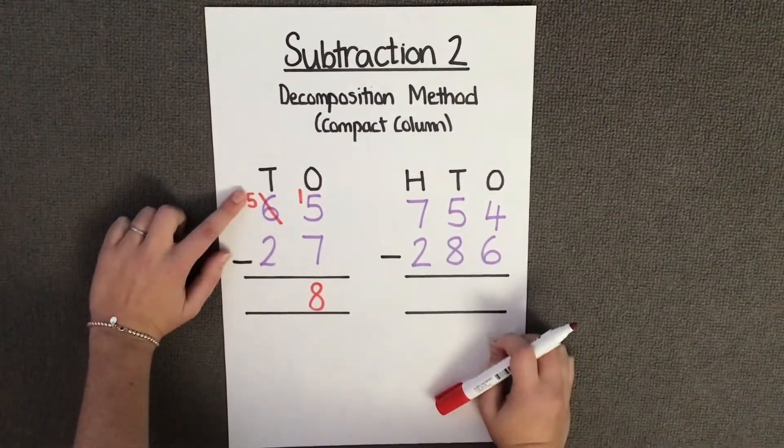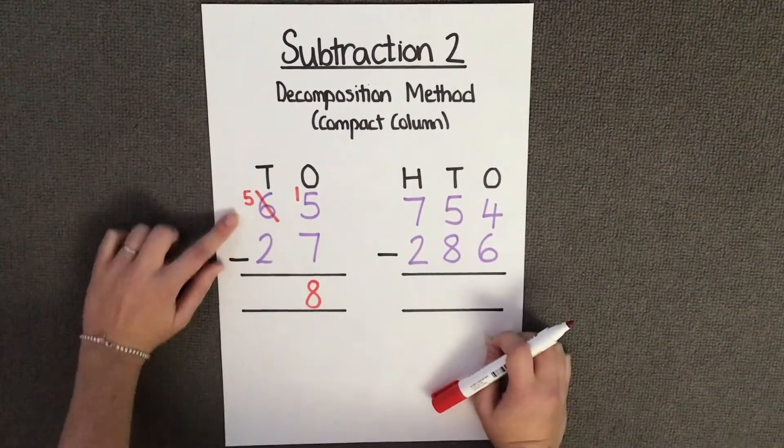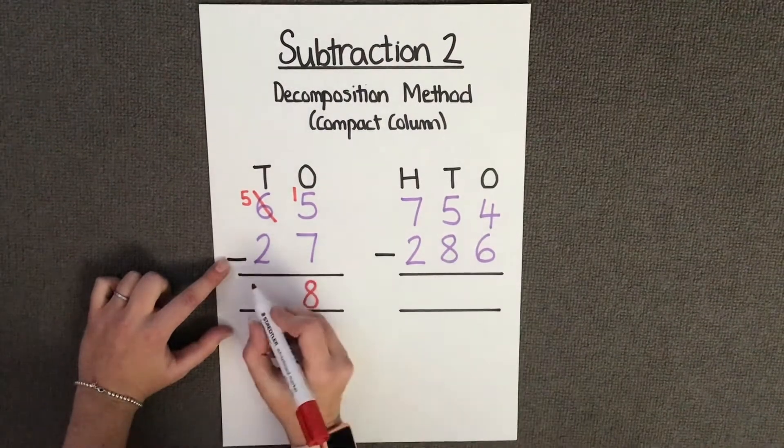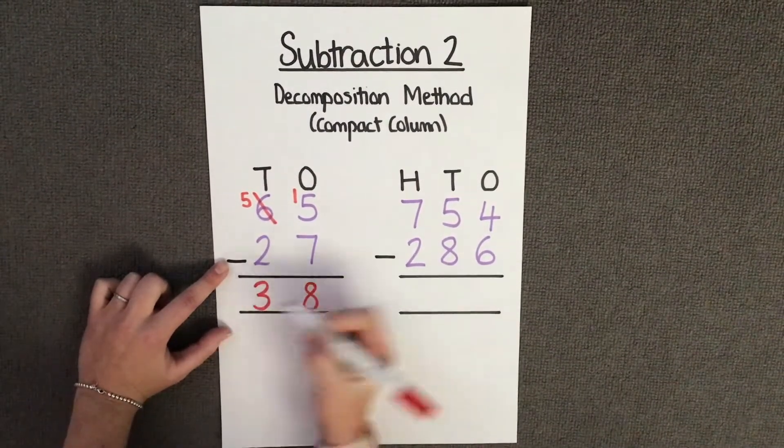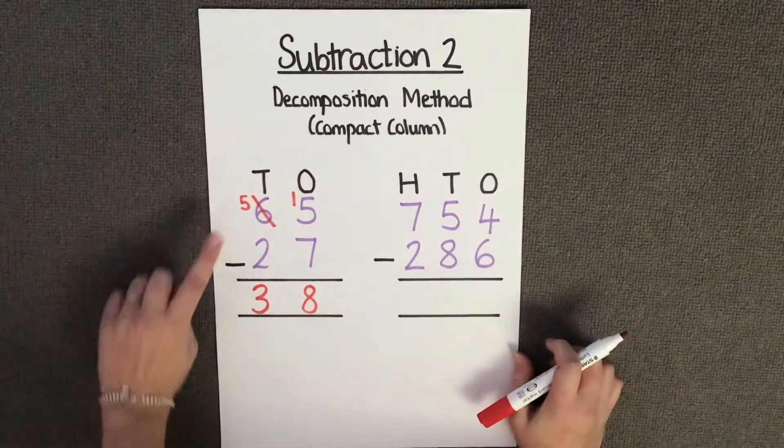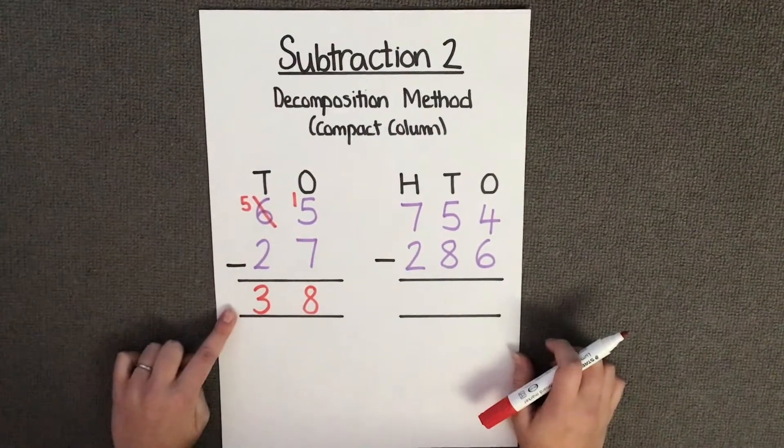Now I'm going to subtract my tens. I have 5 tens, take away 2 tens, which leaves me with 3 tens. Therefore, my answer to 65 take away 27 equals 38.